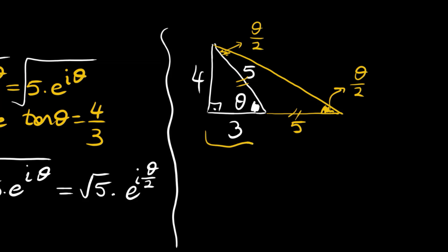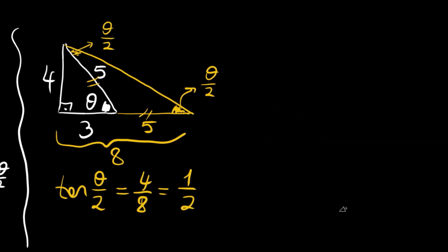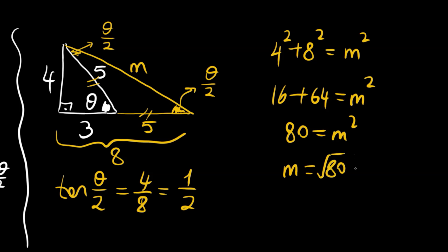The new triangle has legs of 4 and 8, giving tan(θ/2) equals 4 over 8, which is 1/2. To find the hypotenuse m: 4 squared plus 8 squared equals 16 plus 64 equals 80, so m squared equals 80 and m equals 4 times the square root of 5.